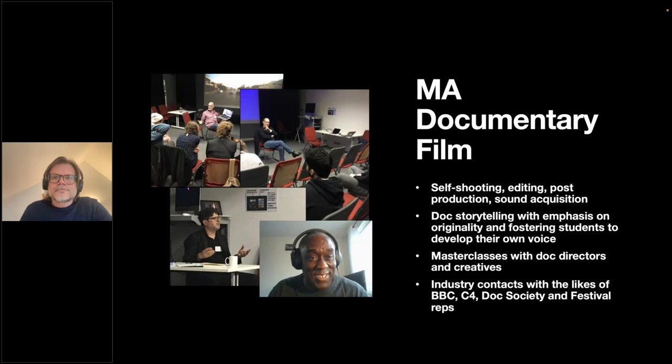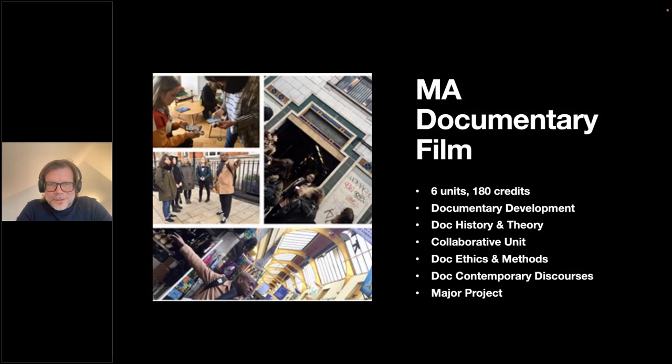You've got 180 credits in a master's degree, divided across six different units on the course. The introductory units in the first term include the Documentary History and Theory unit and the Documentary Development unit.